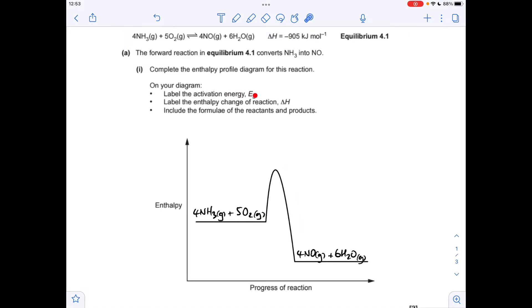Now we've got to label the activation energy, Ea, so that is an arrow going from the reactants line up to the maximum of that curve. And the other thing we've got to do is label the enthalpy change for the reaction as delta H, so that's going from the reactants down to the products.